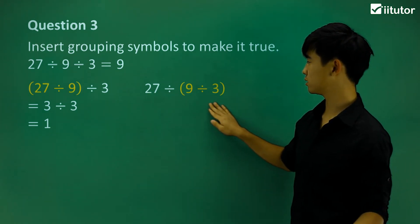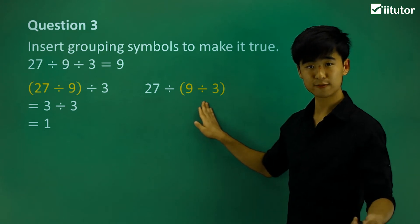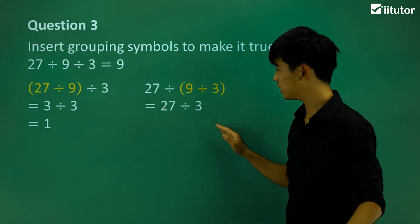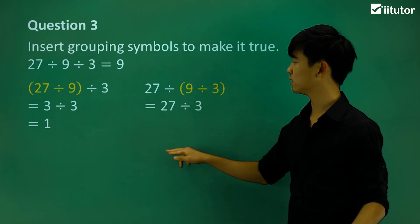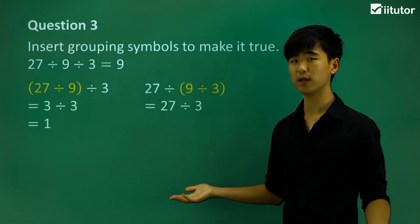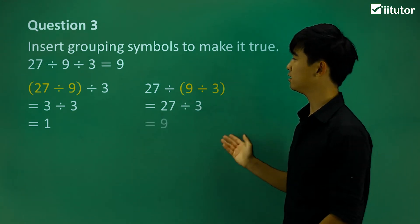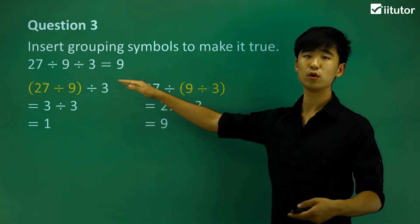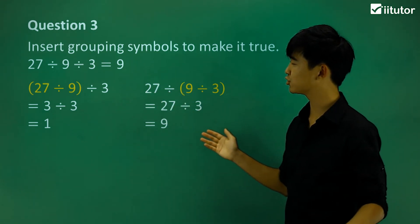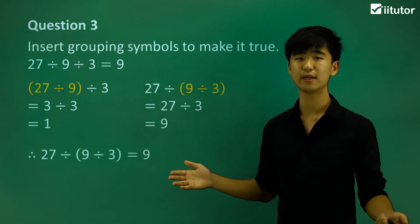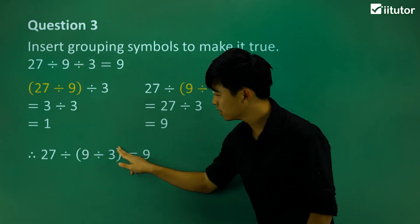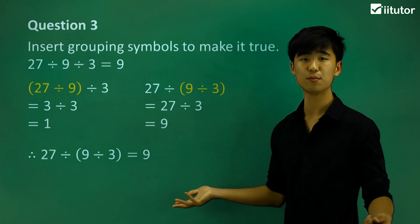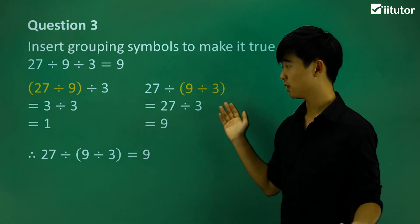Now let's take a look at this one. We do the inside of the brackets first: 9 divided by 3 is 3, and now 27 divided by 3 gives me 9 — which is the one we want. So we make this true by adding the grouping symbols between the 9 and the 3. That's how we make this statement true.